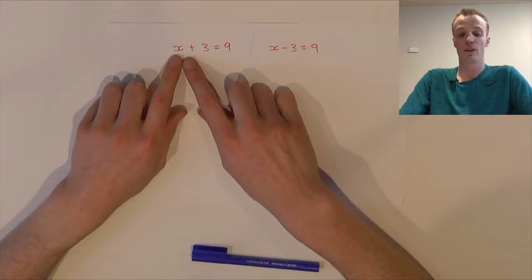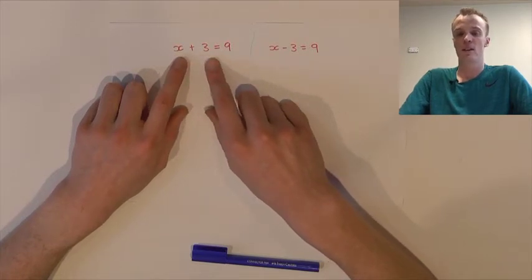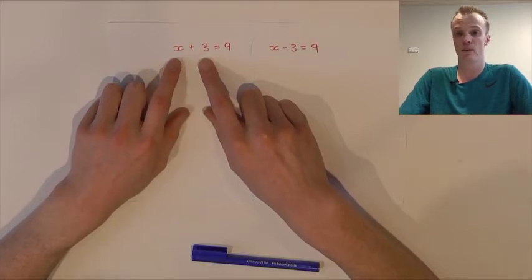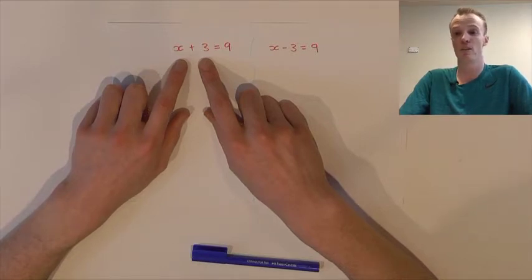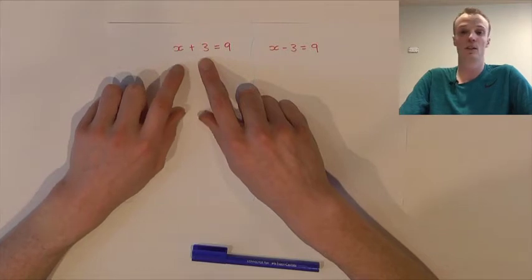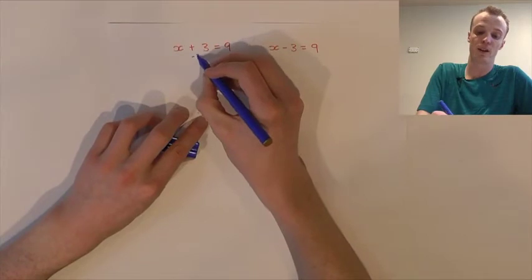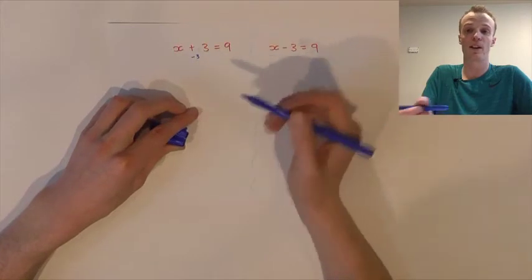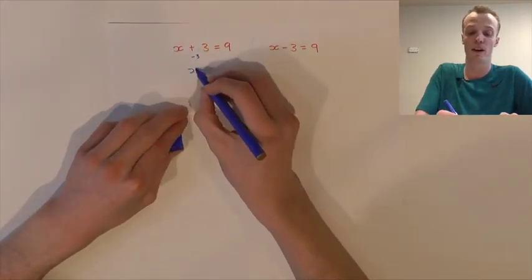In this case, we've got the x on the left-hand side and we've got a plus 3 on this side, so we need to remove the plus 3. To do that, we can perform the inverse operation — the opposite of addition — which is subtraction. So if we subtract 3 from the left-hand side, these two will cancel each other out. Plus 3 subtract 3 equals 0, so on the left-hand side we'll just be left with our x value.